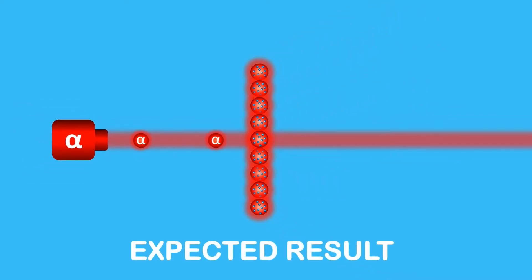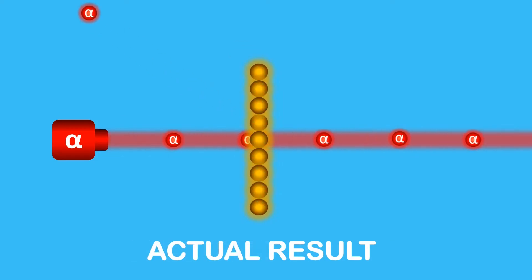Now if the plum pudding model was correct, the alpha particles would simply pass through the gold atoms. But surprisingly, 1 in 20,000 alpha particles were deflected backwards.